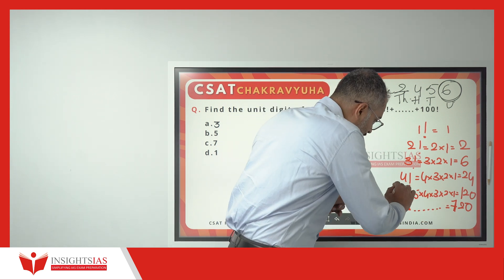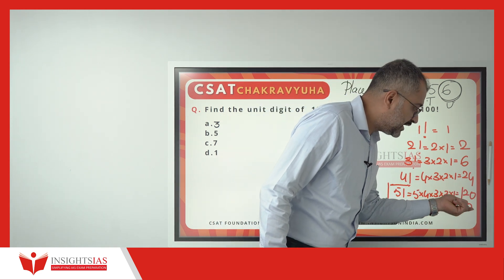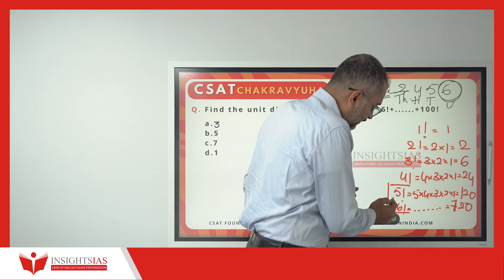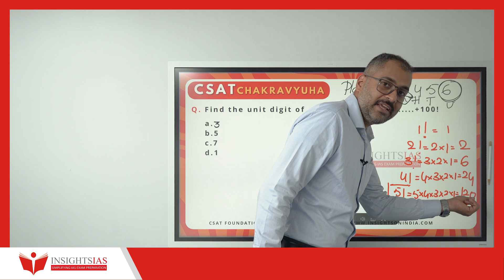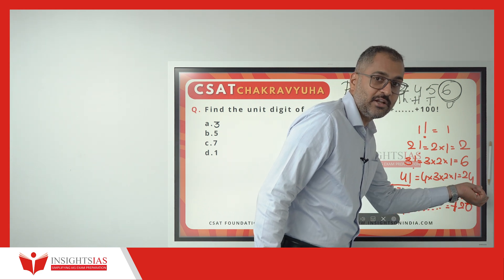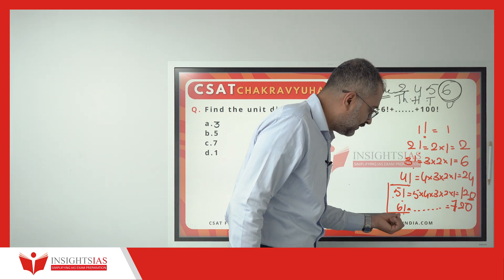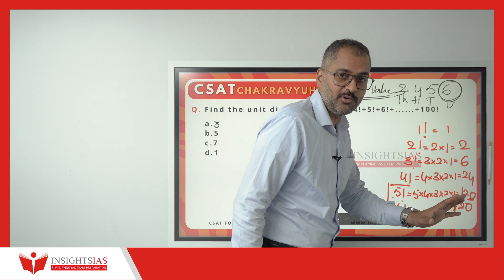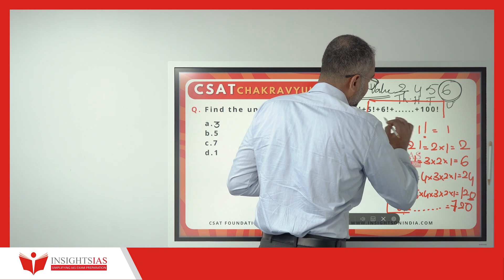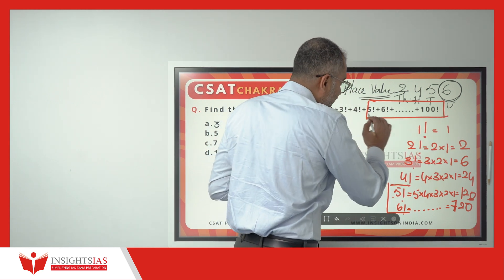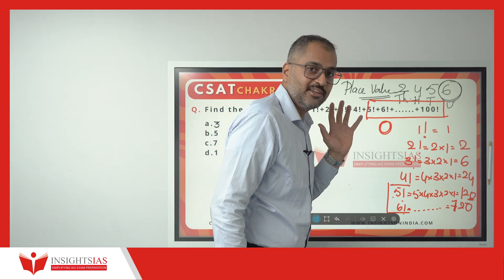From 5 factorial onwards, the unit digit will remain 0, because 5 factorial value is 120. The unit digit of 120 is 0. When you multiply any number to 120, the result again ends in 0. So from 5 factorial onwards till 100 factorial, the unit digit will be 0 only. No need to calculate — we already know that this is 0.